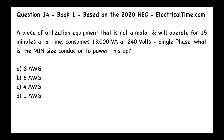Question 14, book number one, based on the 2020 NEC from electricaltime.com. A piece of utilization equipment that is not a motor and will operate for 15 minutes at a time consumes 13,000 VA at 240 volts single phase. What is the minimum size conductor to power this up? The answer to this question is B, which is 6 AWG.